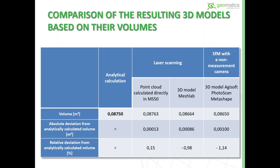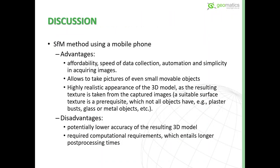We can see there are some deviations from the calculated volume — approximately about one percent. The worst deviation is 1.14 percent, which in our opinion was caused by the fact that the modeled object did not have very rich texture in some places. The quality of the camera and the distortion of the lenses certainly played some role as well.